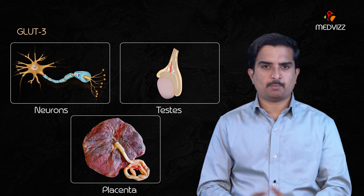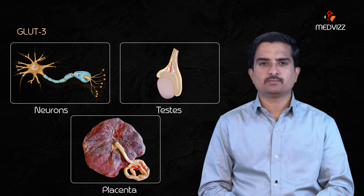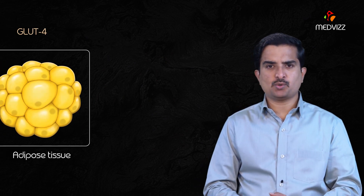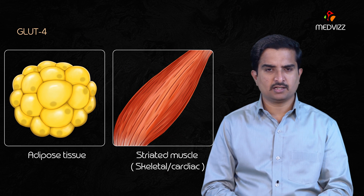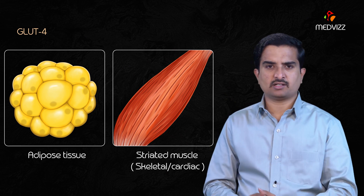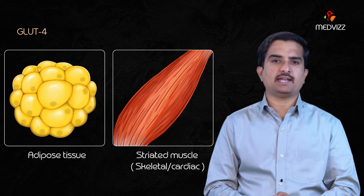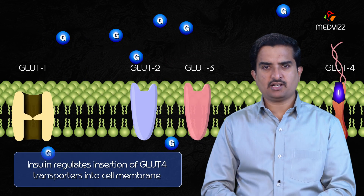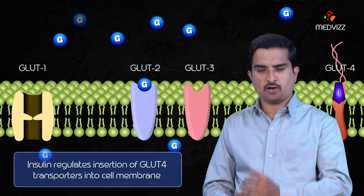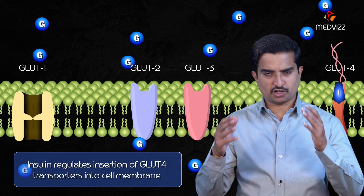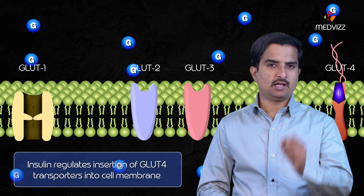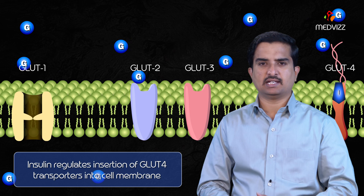GLUT 4 is very important: the adipose tissue and striated muscle — that is, skeletal as well as cardiac muscle — utilize the GLUT 4 mechanism. Insulin regulates the insertion of GLUT 4 transporters into the cell membrane in response to high glucose levels.